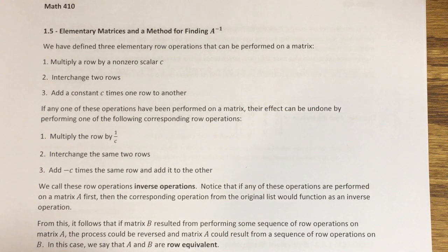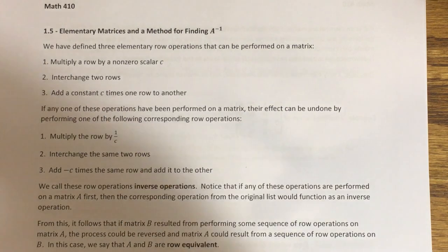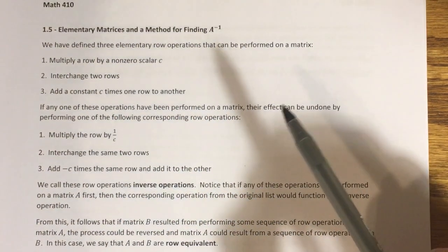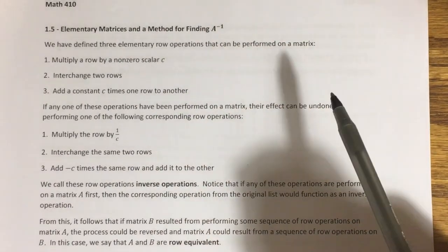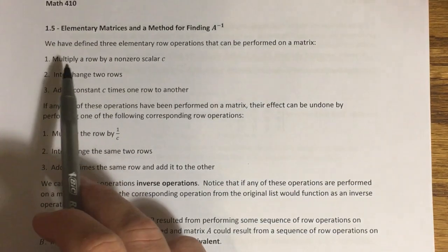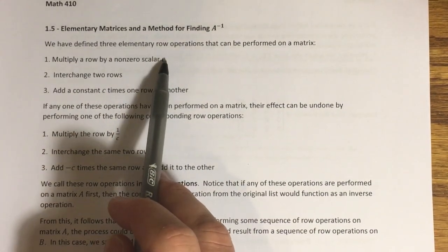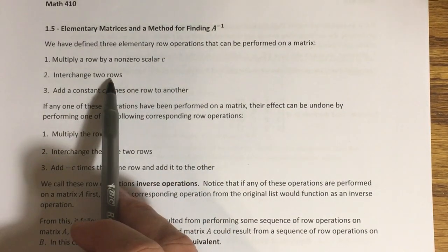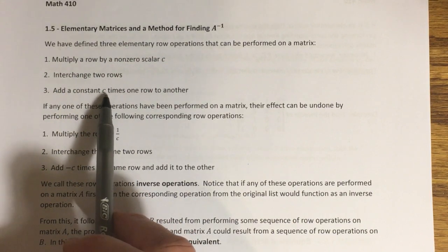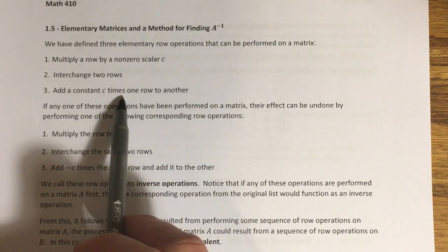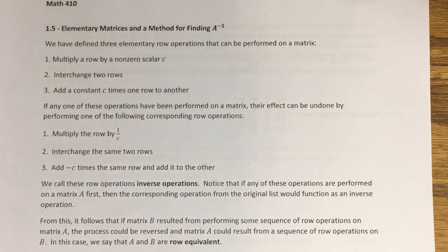From sections 1.1 and 1.2, we talked about Gaussian elimination and how you can use three operations to put a matrix in row echelon or reduced row echelon form. Those three operations are: multiplying a row by a non-zero scalar C, interchanging any two rows, or adding a non-zero constant C times one row to another row. By this point you will have done lots of practice with that doing Gaussian elimination.